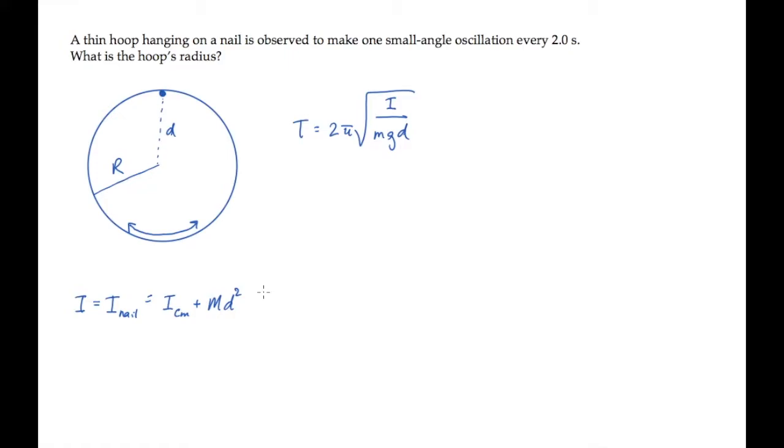The moment of inertia about the center of mass is mr squared. With d equal the radius r, we find that the moment of inertia about the nail is twice mr squared.